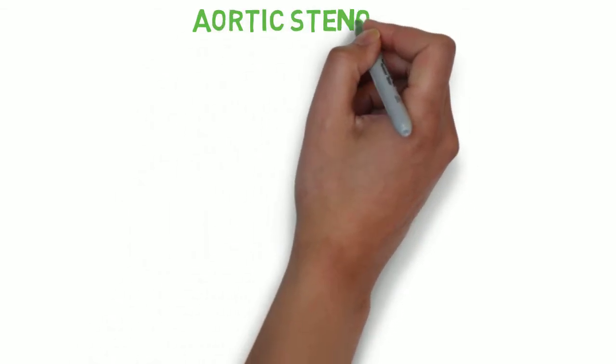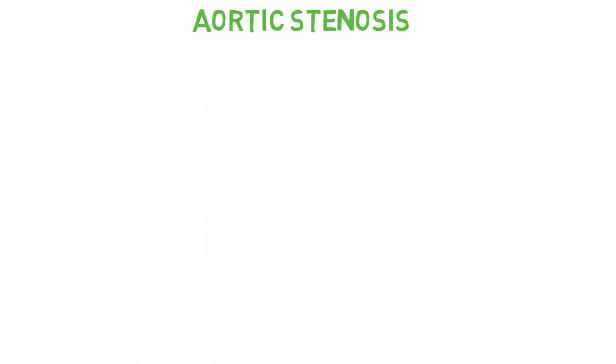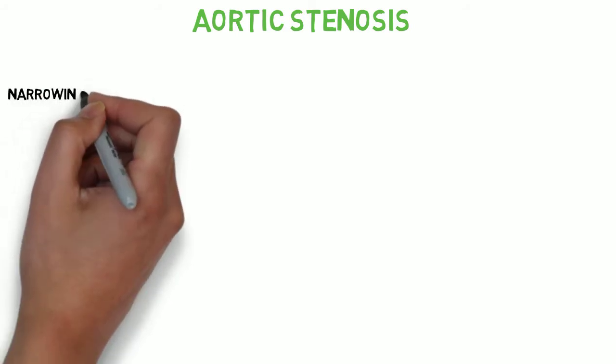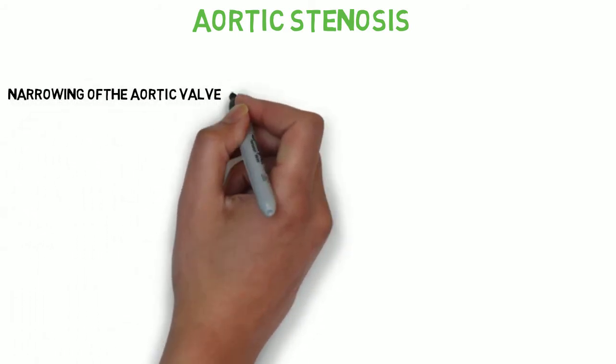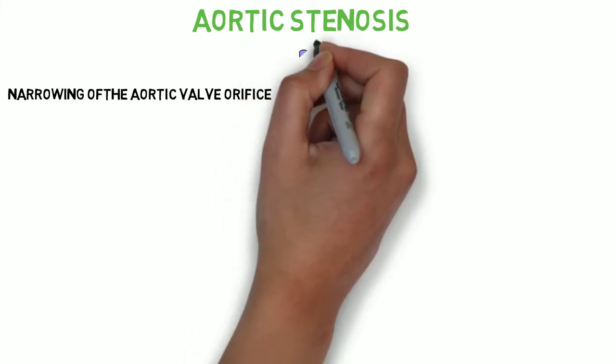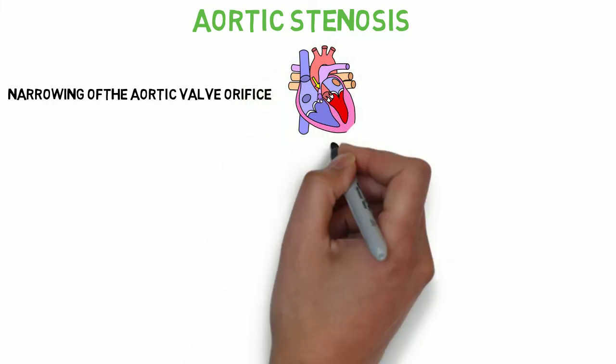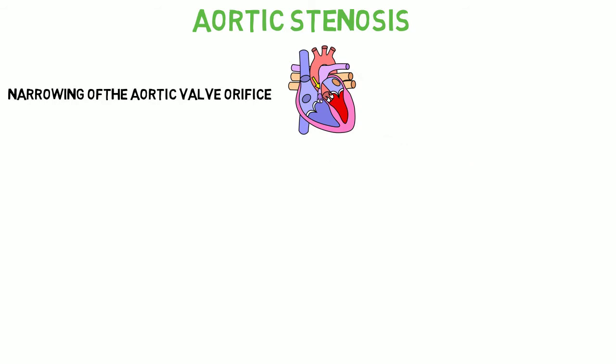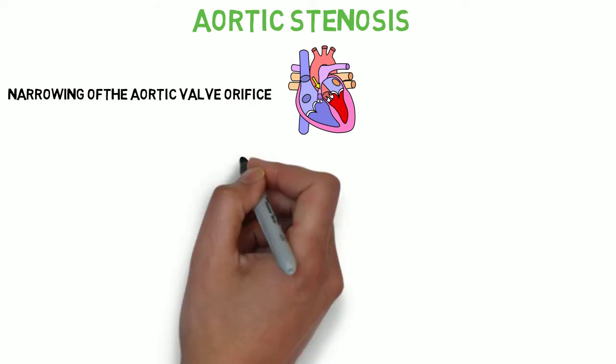Welcome to my YouTube channel. Today I am going to take on aortic stenosis — a quick recap or insight into the topic. Starting with the definition: aortic stenosis is a valvular disorder in which there is a narrowing or reduction in the orifice of the aortic valve, and we say the valve has become stenosed. The aortic valve guards the opening of the aorta from the left ventricle.